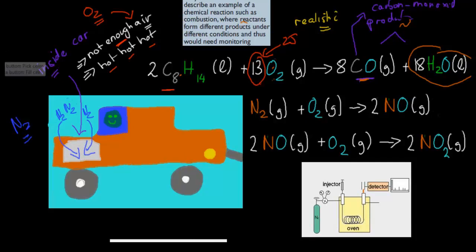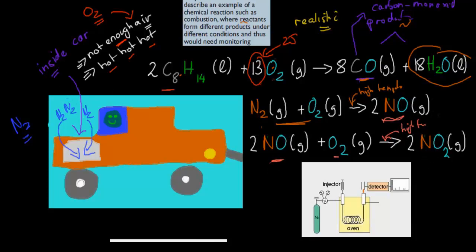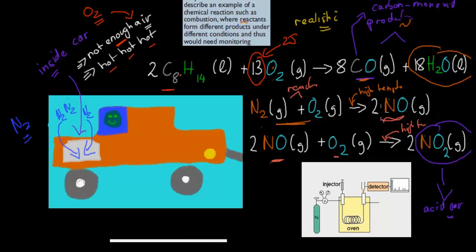But once nitrogen gets inside the engine, because it's so hot, we need high temperatures for nitrogen gas to combine with oxygen to form nitrogen monoxide. Nitrogen monoxide, if the temperatures remain high for long enough, will then combine with even more oxygen to form nitrogen dioxide. And nitrogen dioxide — remember — causes acid rain. So this is really poisonous. So we have the same reactants — nitrogen and oxygen in the air — but if the conditions are different and there are no high temperatures, we won't form nitrogen monoxide or nitrogen dioxide. But because we have high temperatures in the engine, the condition is different, and we form these pollutants.